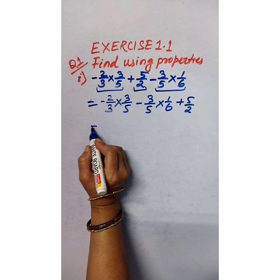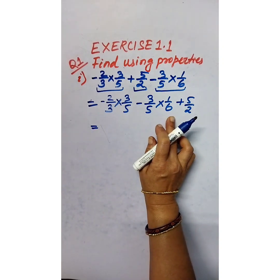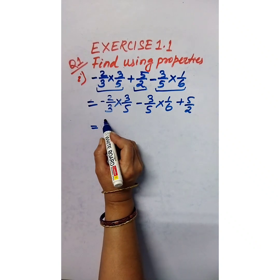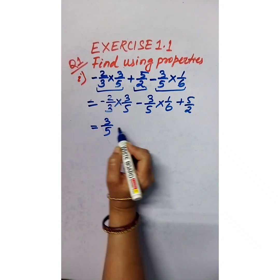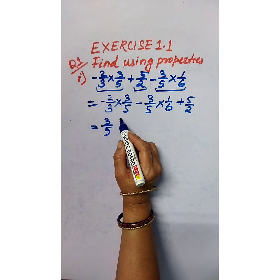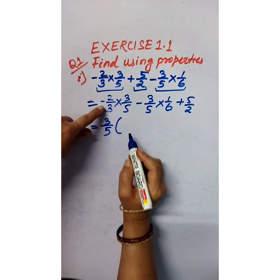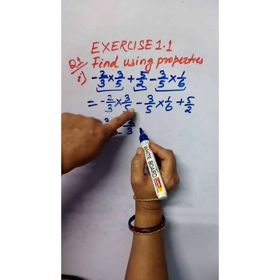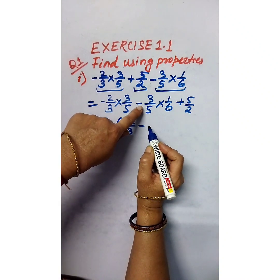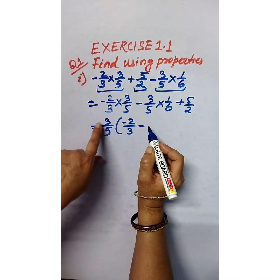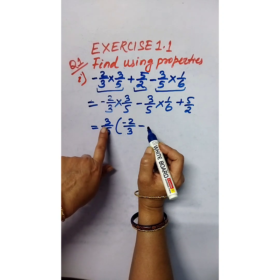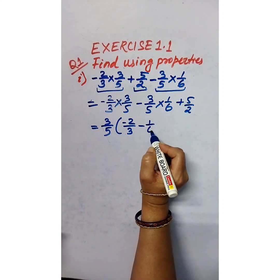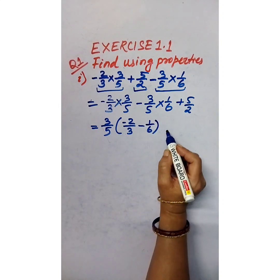In the next step, 3/5 is common to these two terms, so let us take 3/5 as common. When we take out positive 3/5 as common, what is left? Negative 2/3 from the first term, and negative 1/6 from the second term.